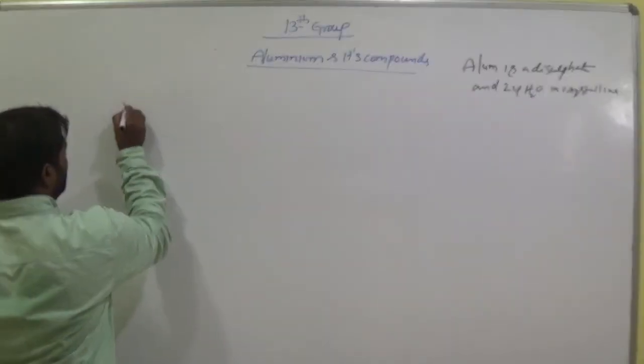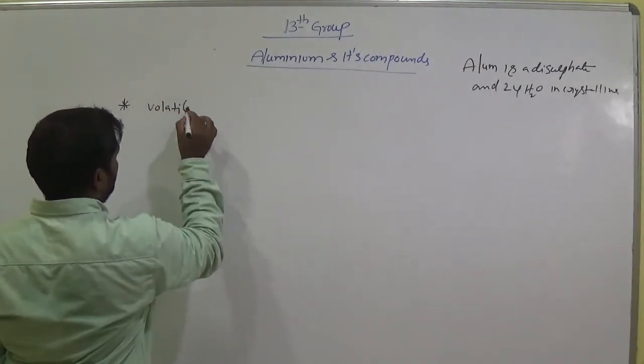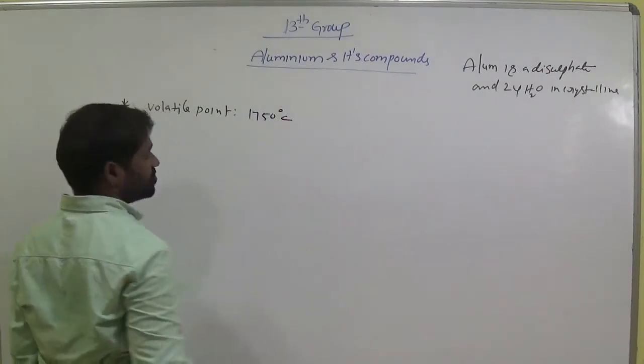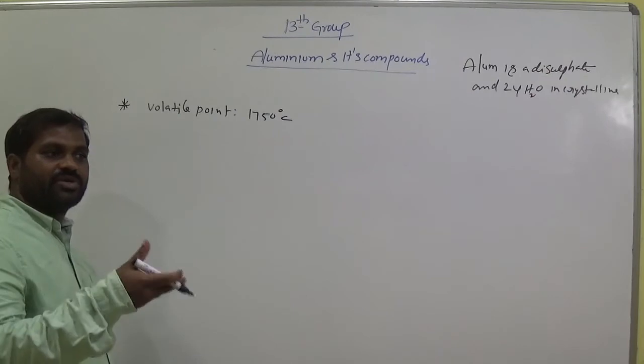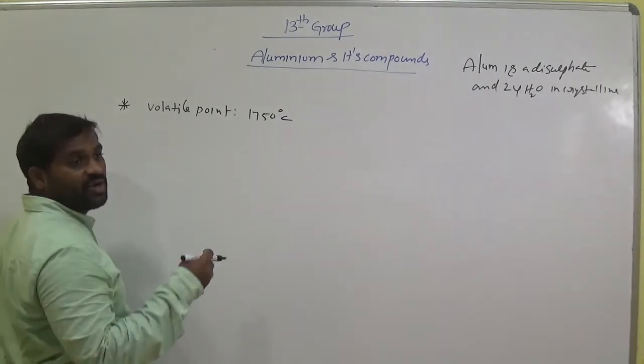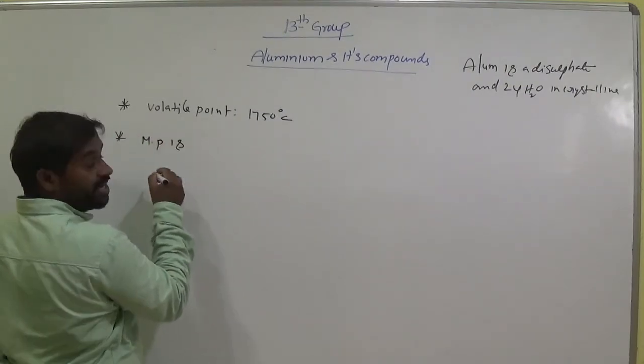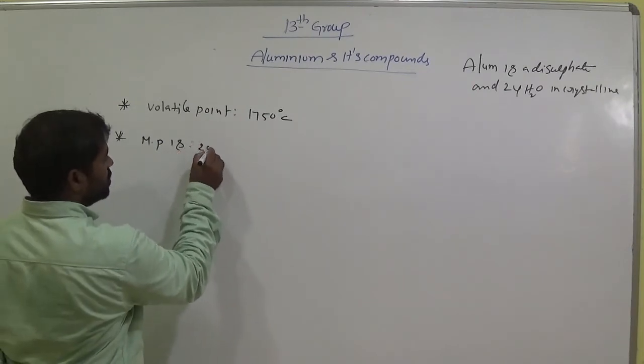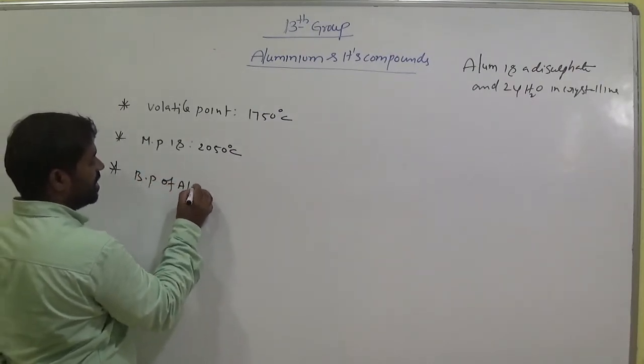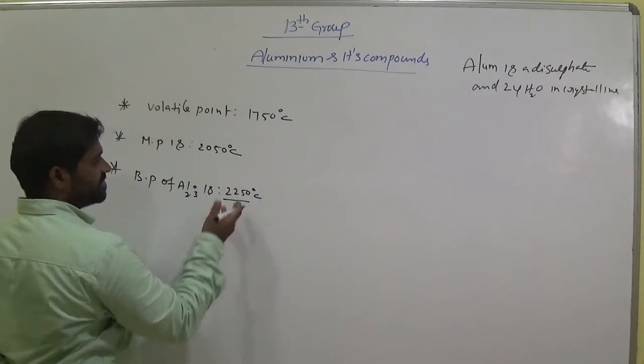Keep it compound here. Volatile point is 750 degrees. Volatile means the temperature at which liquid can able to evaporate is called as its evaporate point here or volatile point, that is 750 degrees. Volatile means evaporation here. And its melting point of Al₂O₃ is at 2050 degrees Celsius and it has boiling point of Al₂O₃ is 2250 degrees Celsius. That means high melting points, high boiling points it has.